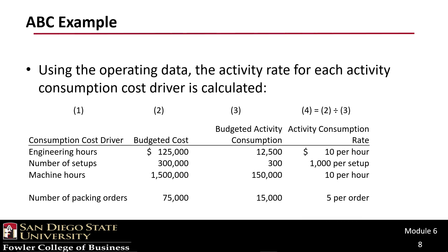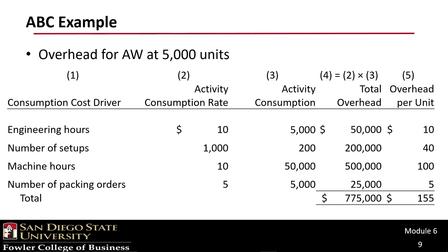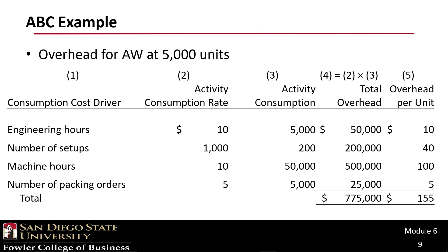Now that we have our activity consumption rates, we can do activity-based costing. To apply overhead for AW at 5,000 units: the engineering rate is $10 times 5,000 engineering hours equals $50,000. We apply the same logic for setups, machine hours, and packing orders using the data from previous slides. The total overhead cost for AW at 5,000 units is $775,000, or an overhead per unit of $155.